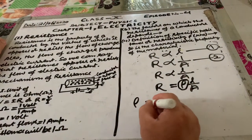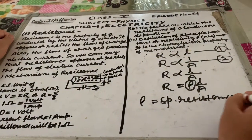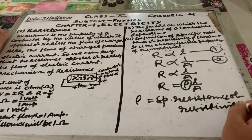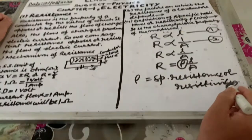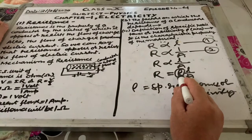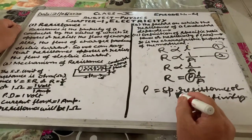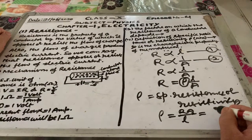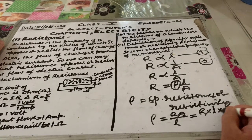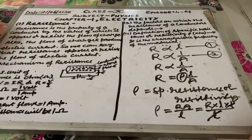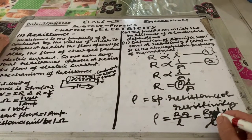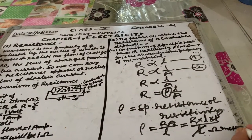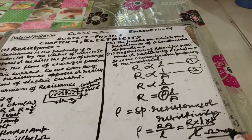From R = rhoL/A, we get rho = RA/L. Writing A as L squared divided by L, the L cancels, giving rho = R times L. The unit of R is ohm and the unit of length is meter, so the unit of resistivity is ohm·meter.